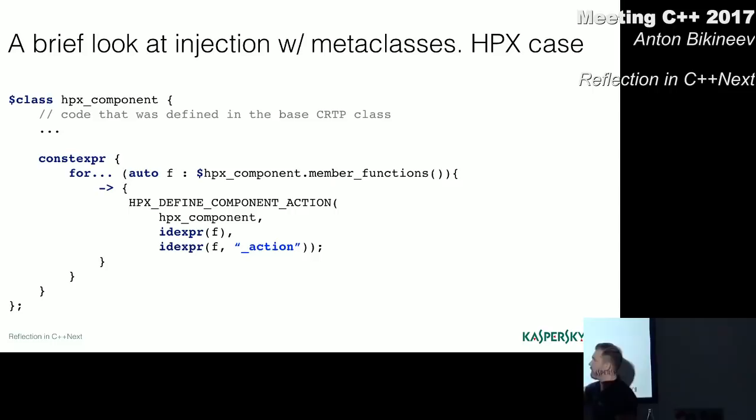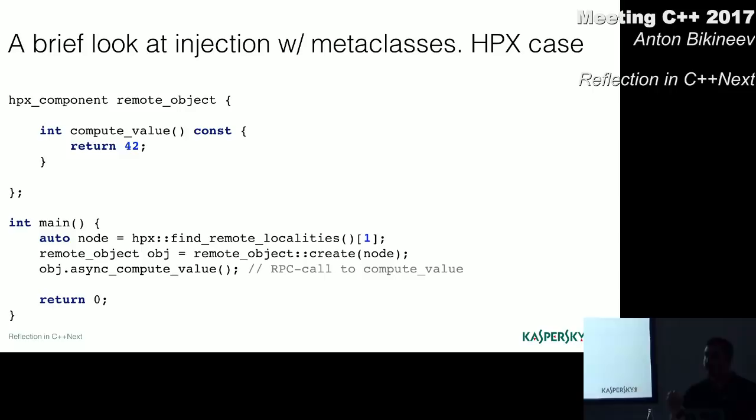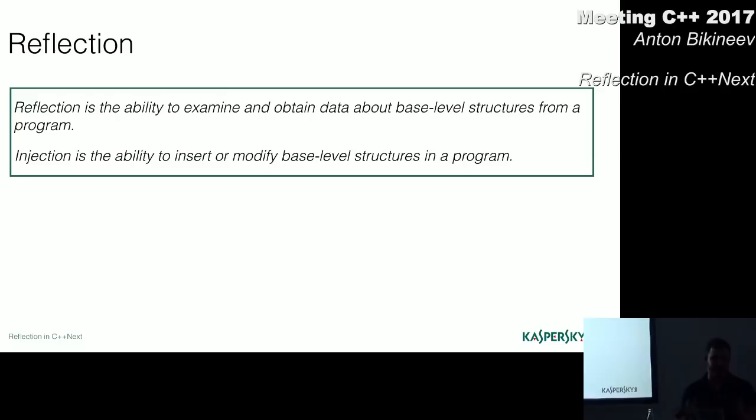And defining the component type is simply defining the usual C++ type with a small yet very annoying exception. And it is that for every method of that class you need to write some boilerplate code. And this class should be CRTP inherited from another base class. Of course there is a helping macro for this. But even with the macro, it's still boring to write these capital letter monsters. So meta classes are there to help.